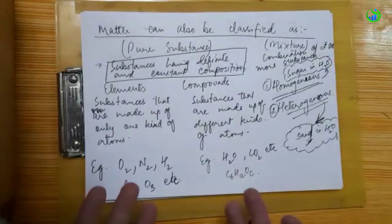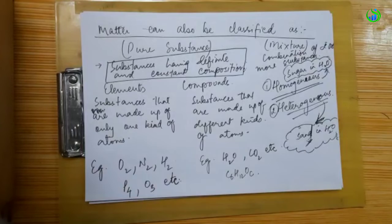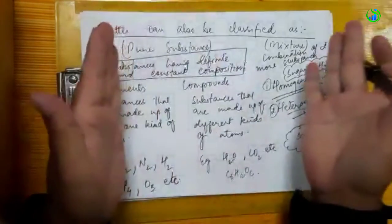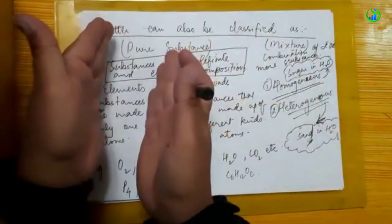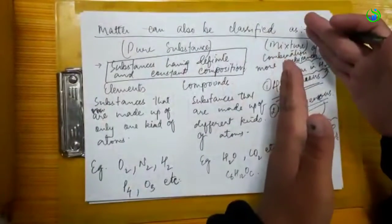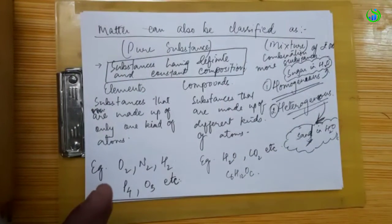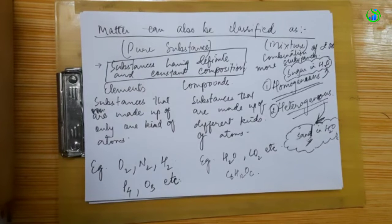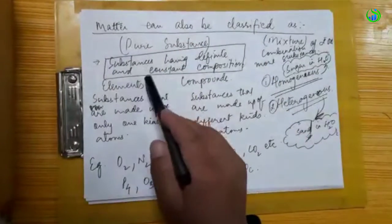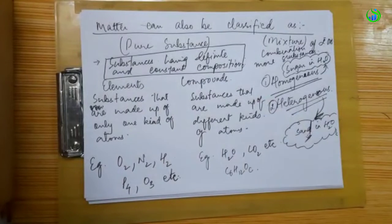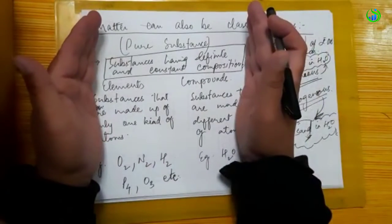At the macroscopic level — that is the bulk level — we can classify matter as pure substances and mixtures. Pure substances are those substances whose composition is fixed, definite, and constant — they do not change. These are called pure substances.